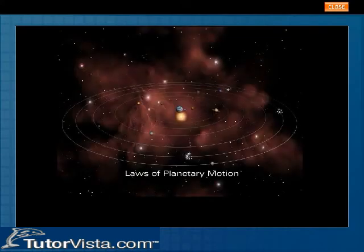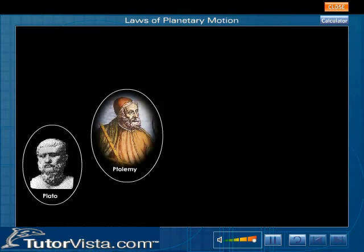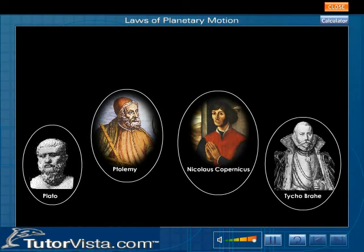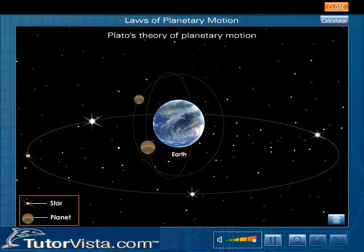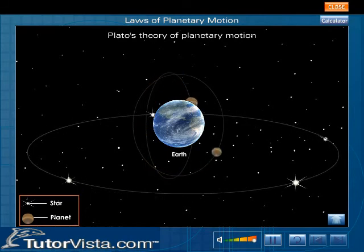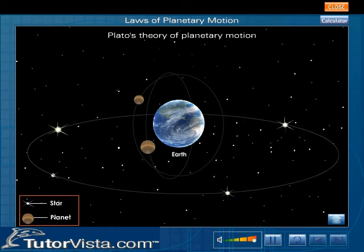Laws of Planetary Motion. Plato's Theory of Planetary Motion: According to Plato, the Greek philosopher, the stars move in perfect circular paths around the Earth. The planets, on the other hand, seem to trace irregular figures.